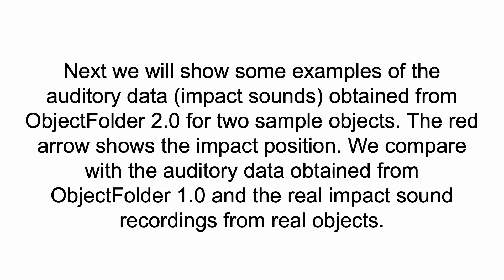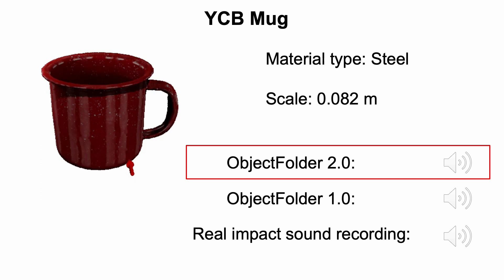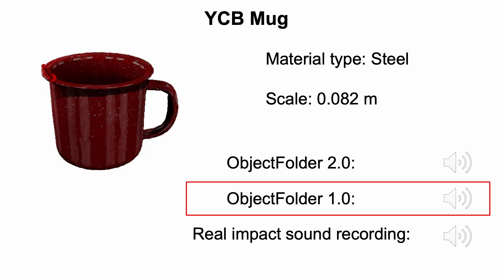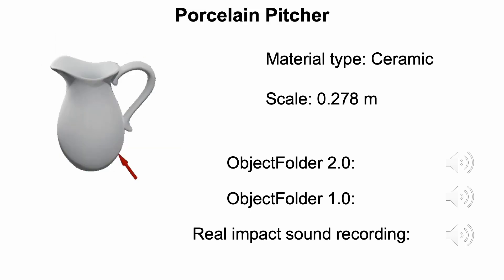Next, we show examples of the auditory data — impact sounds — obtained from Object Folder 2.0 for two sample objects. The red arrow shows the impact position. We compare with auditory data from Object Folder 1.0 and real impact sound recordings. Here is one example for the YCB mug object of steel material type. Object Folder 1.0 predicts audio spectrograms directly and cannot capture mode signal details, leading to artifacts or noise in the rendered audio. Our Audio Net renders audio in a much more accurate manner and is more similar to real impact sound recordings, though not perfect.